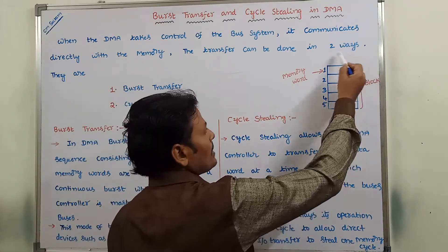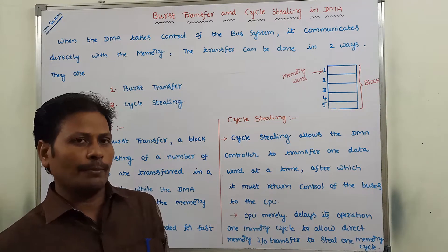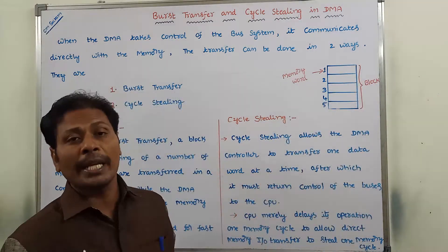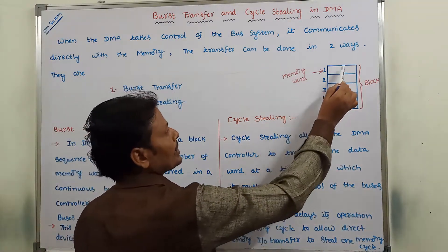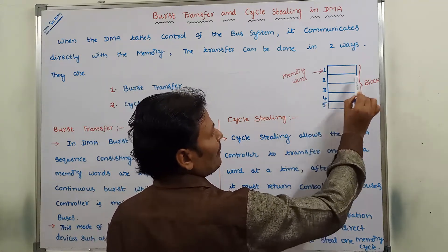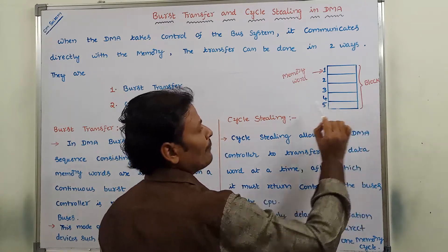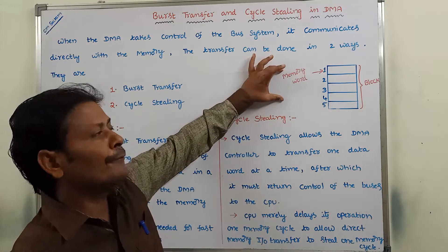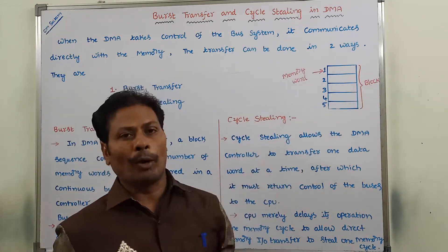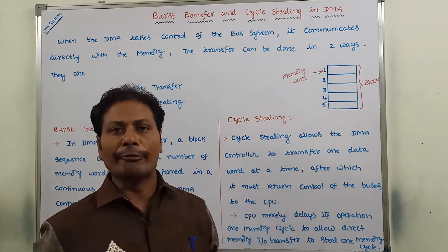Before going to the two types of transfers, we have to discuss about block and memory word. A block consists of a sequence of memory words. Suppose this block contains five memory words: memory word 1, memory word 2, memory word 3, memory word 4, and memory word 5. So five memory words can be combined as a single block — a block consists of five memory words.